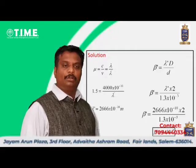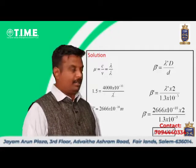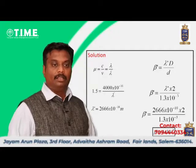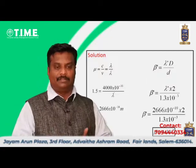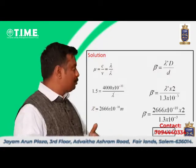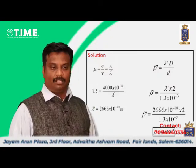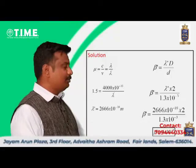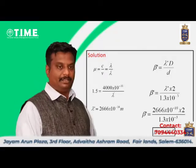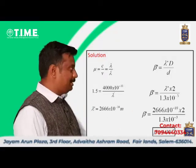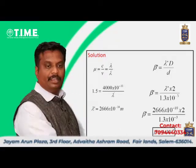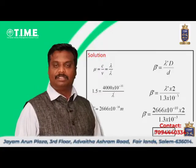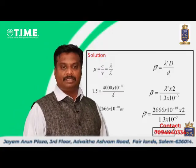Mu equals C by V, which also equals lambda by lambda dash. To find the value of lambda dash: mu is 1.5, lambda is 4000 into 10 power minus 10. Rearranging, lambda dash equals 4000 into 10 power minus 10 divided by 1.5. So lambda dash is approximately 2667 into 10 power minus 10 meters.